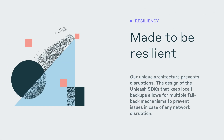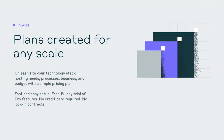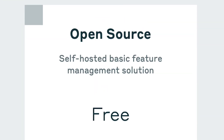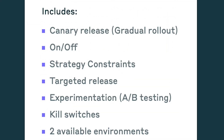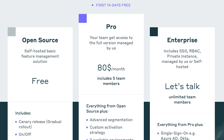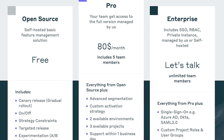It is also resilient, meaning they have multiple fallback mechanisms to prevent issues if there are network disruptions. Unleash is available under an Apache license. It is free up to two environments when you self-host, and a paid managed version is available.